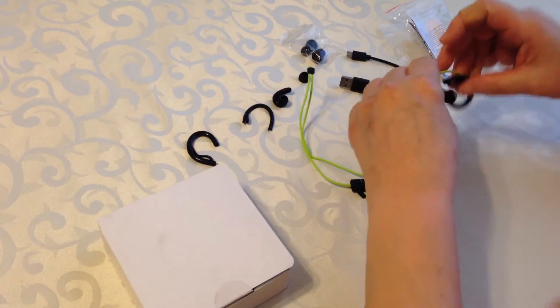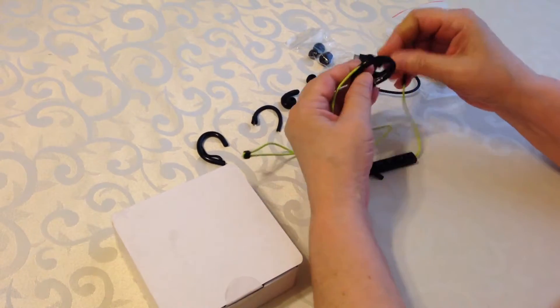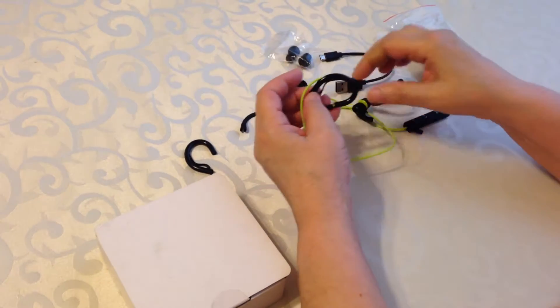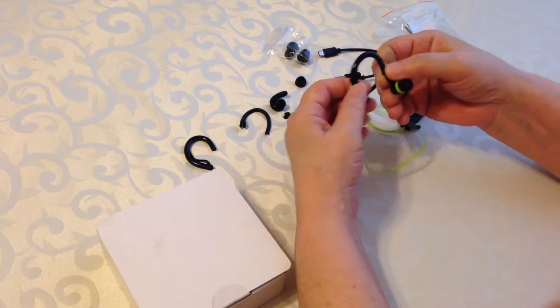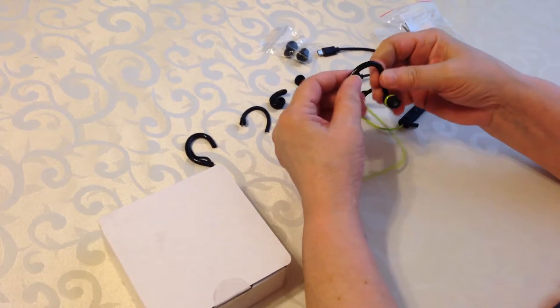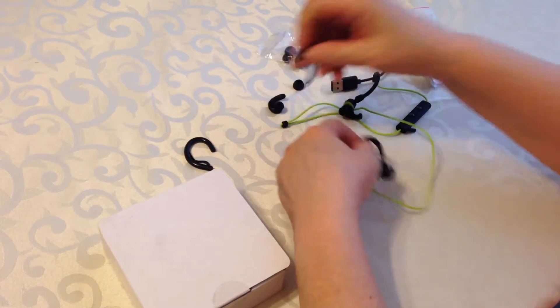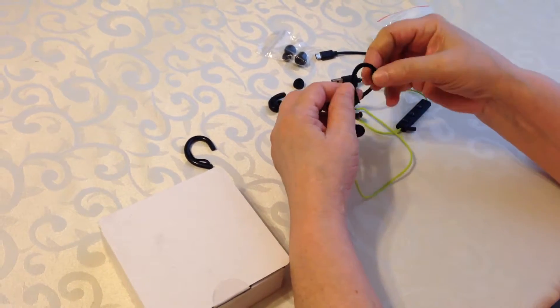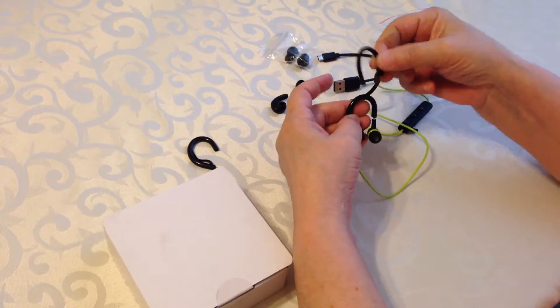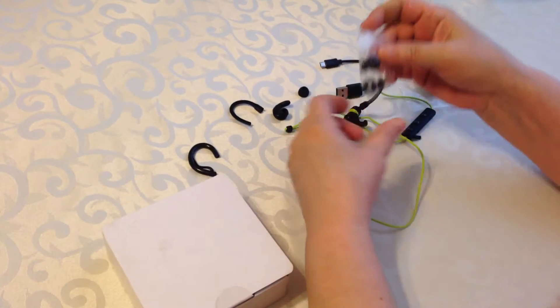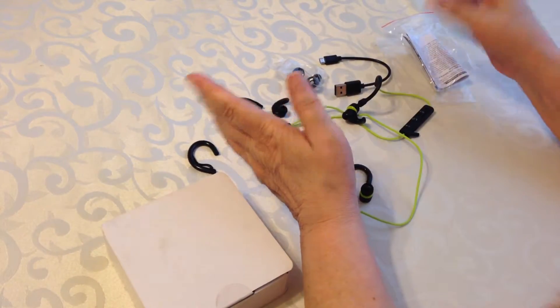We have set these earbuds up two different ways. This is one of the options here, so it's just going to go in your ear. This one is more of a firm rubber that goes around the ear, but there's also another one that isn't quite as heavy-duty. And there's a whole bunch of these, so you should be able to get the perfect fit.